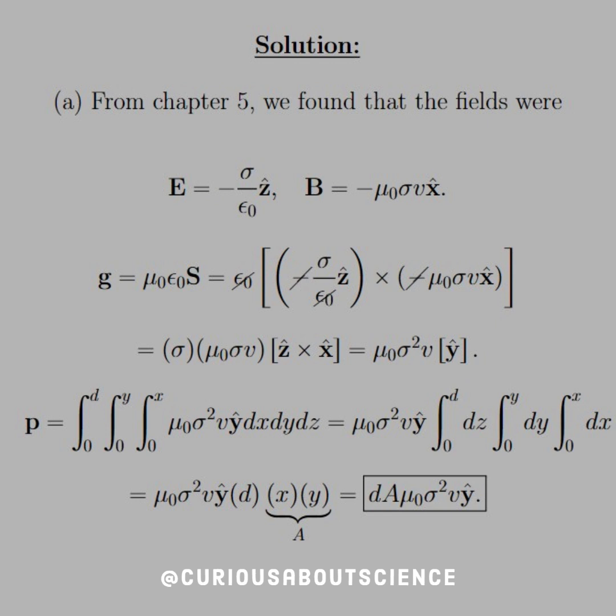All right, so Part A: from chapter 5, which I'll link, that is 5.17 if you want to note. We found that the fields - look at this as a parallel plate capacitor if you wish. E is negative sigma over epsilon not in the z hat, which makes sense based on the field flow. B equals negative mu not sigma v. And since the surface charge is moving at some velocity, that is a current in the x direction.